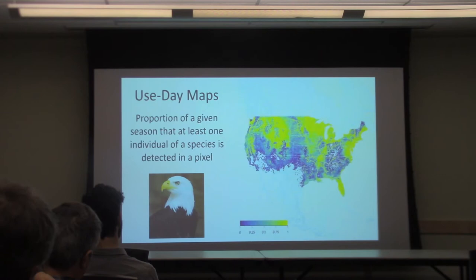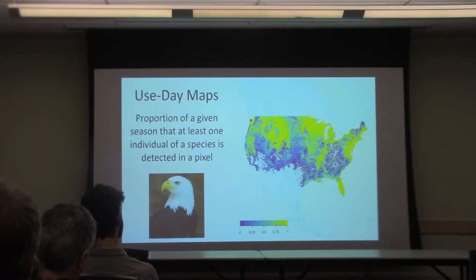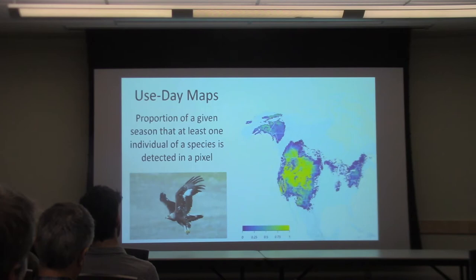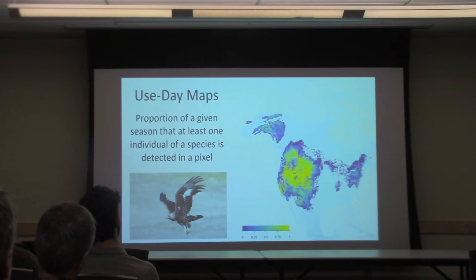Another product we were able to give them were these use-day maps. These maps show the proportion of a season — here it's year-round — that at least one individual of the species is detected in one of those eight by eight kilometer pixels. We produced the same for golden eagles. Working with them, we didn't just hand over maps; we talked through what we had available, what we could do, how we modeled it, and then gave them the underlying data, because they know the questions they want answered better than we do and they have very capable quantitative and GIS staff.